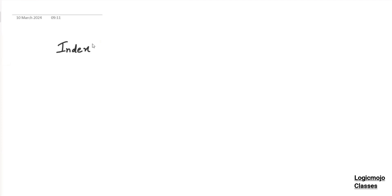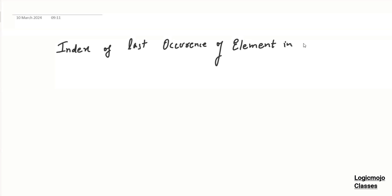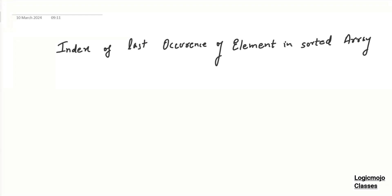So here the question says that we have to find the index of last occurrence — index of last occurrence of an element, whatever is given, in a sorted array. So this is the question. What do we mean by this? Let's say we are given something like this — given something like five.